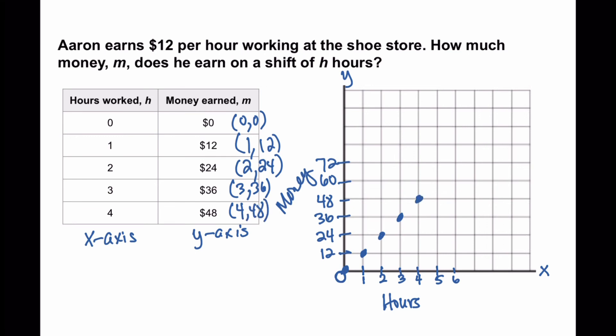So again, when you are looking at a table, your independent variable will be on your x-axis, and your dependent variable will be on your y-axis.